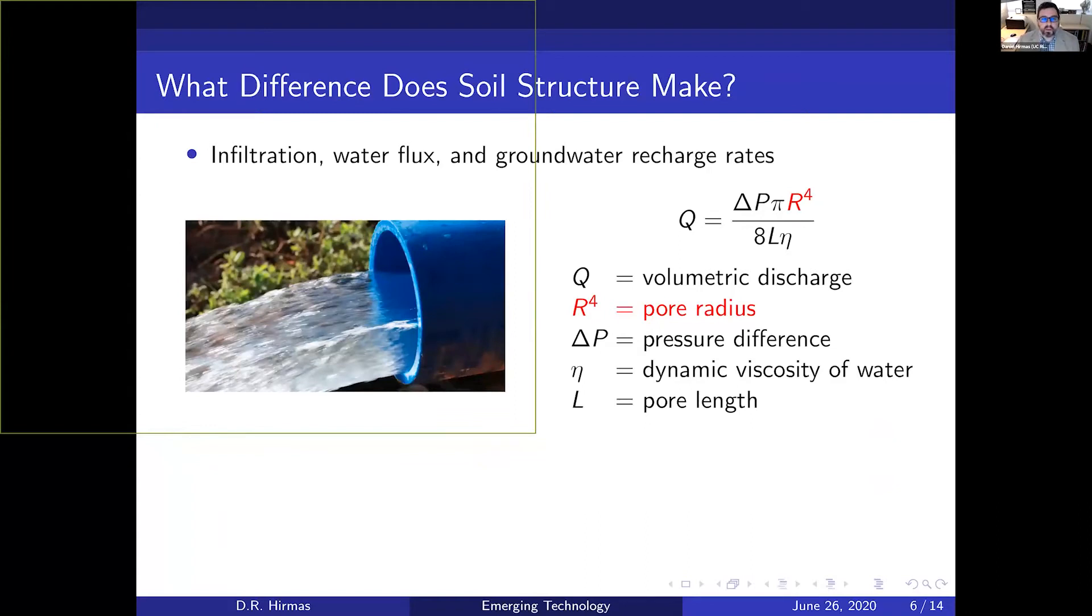The reason why that's important is because it has such a large control over hydrology. The infiltration of water into the ground, the flux of water through the ground, and drainage to groundwater resources is determined by those largest pores. It's been estimated that the largest pores, the macro pores, only occupy about 1% of the volume, but they're responsible for over 70% of the water flow through the soil.